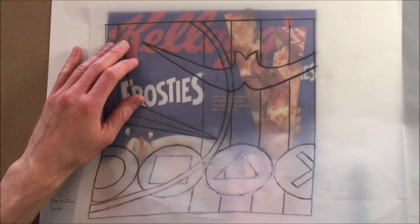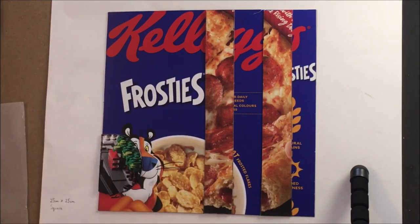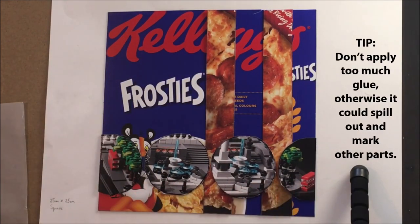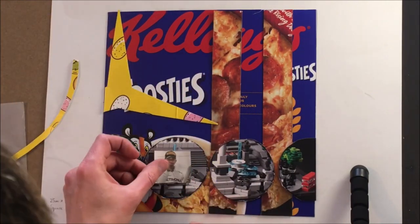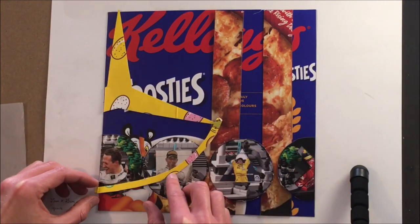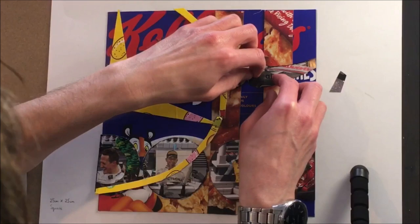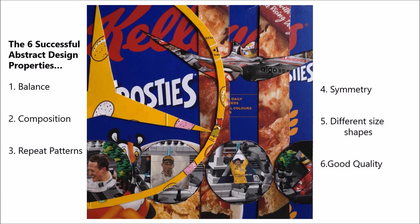Now for layering up — you can still use your tracing paper to get all of the shapes in the correct place, because once you put that base layer down you can't see where the lines are underneath. If you work quickly enough and don't apply too much glue, you can still move pieces about before they dry. Wipe off any spillages, and hopefully if you're using PVA glue it will dry fairly clear. Then finally, layer all of those key bits on — and there you go, the final design featuring all of those six key components: balanced, good composition, repeat patterns, symmetry, different size shapes, and good quality.